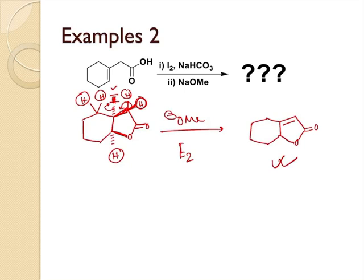This is the product. So first halolactonization occurs, then if it is treated with base, it gives this alpha beta unsaturated product. And this example has come in CSIR NET, so it's a very important topic.